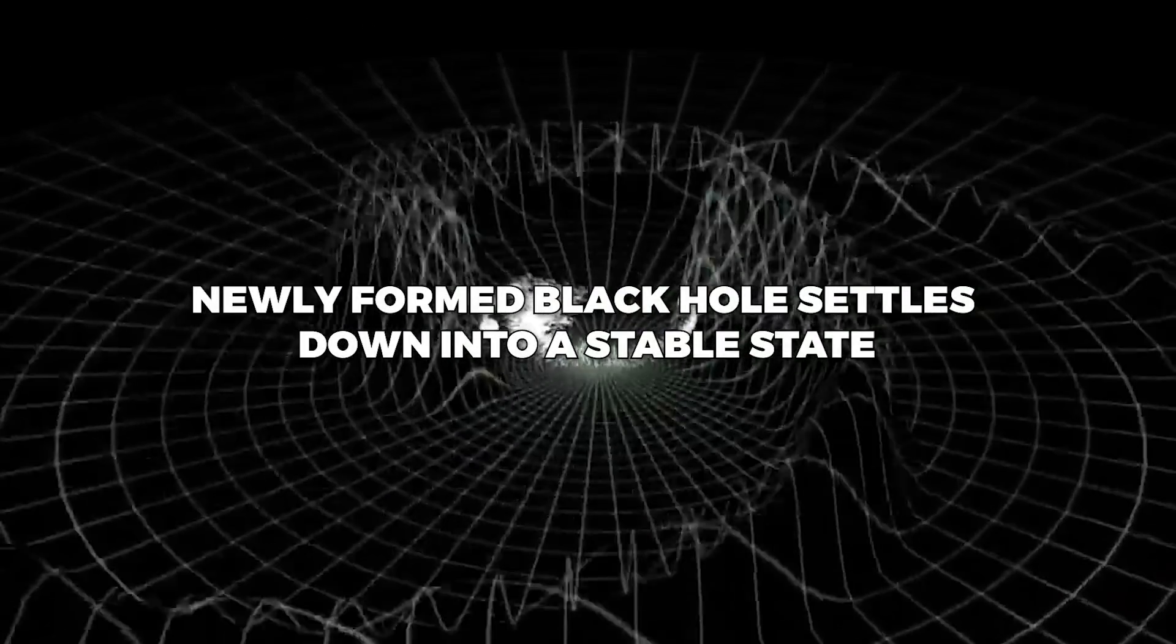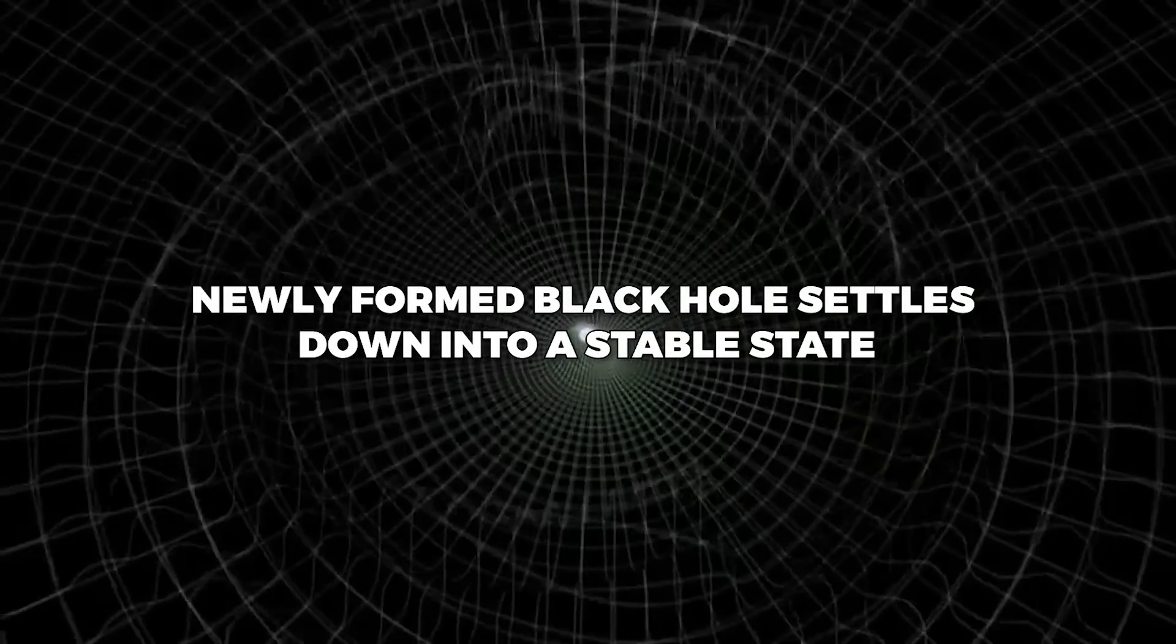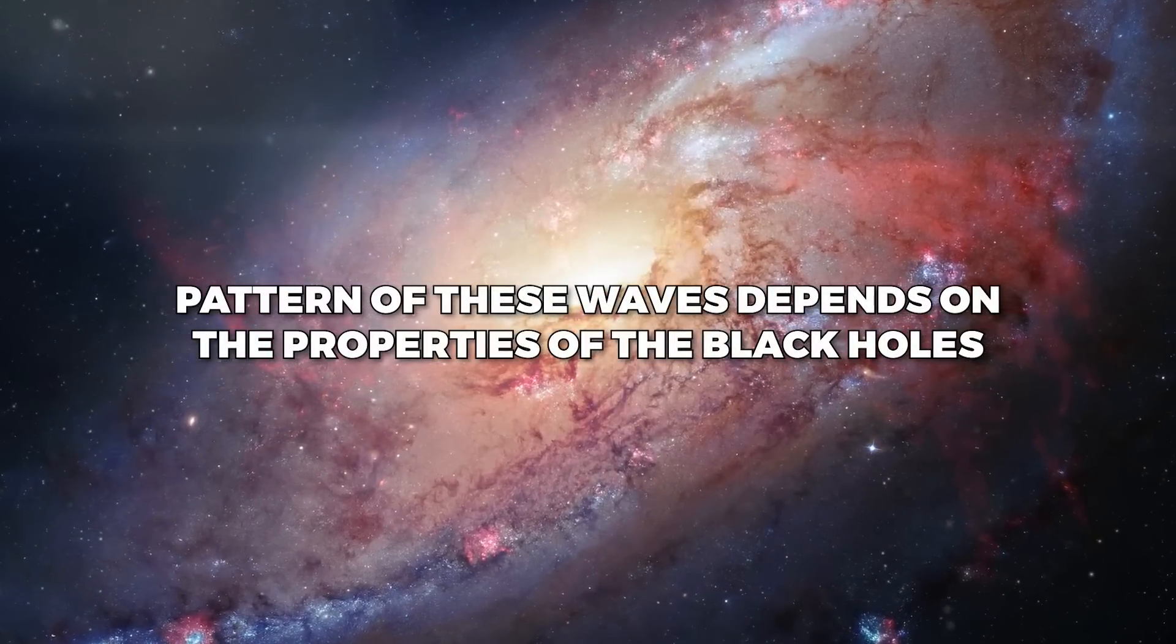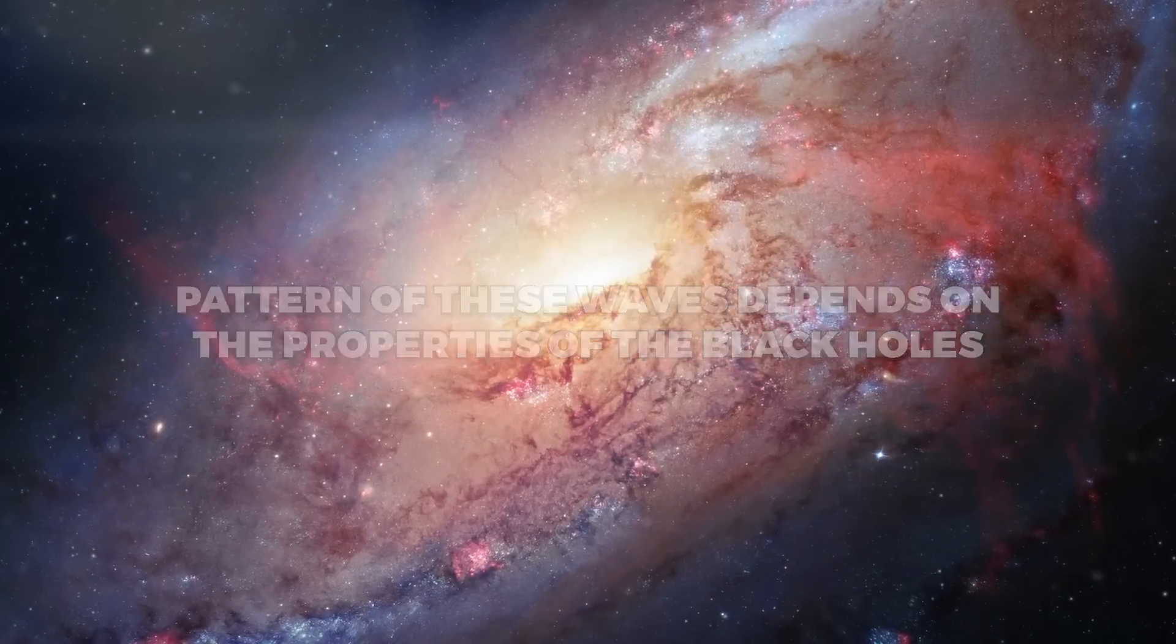Finally, during the ring-down stage, the newly formed black hole settles down into a stable state, emitting a series of weaker gravitational waves that gradually fade away. The exact pattern of these waves depends on the properties of the black holes involved, such as their masses and spins.